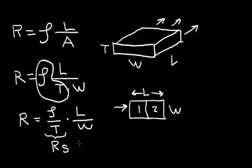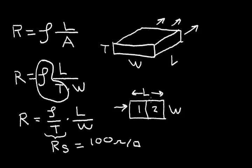For example, let's say I want to have a sheet resistance that's equal to 100 ohms per square. So if I have 100 ohms per square and I have two squares, then my total resistance will be 100 ohms times two, which in this case would be 200 ohms.